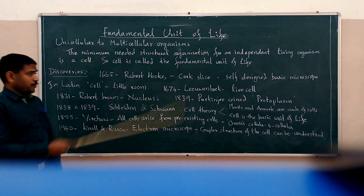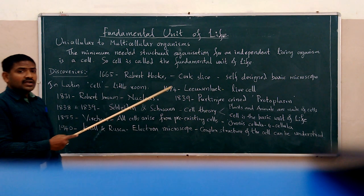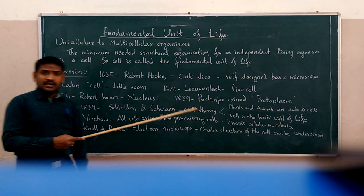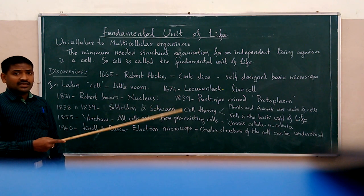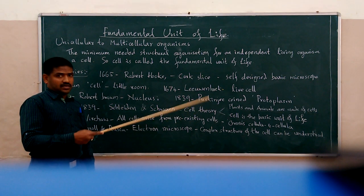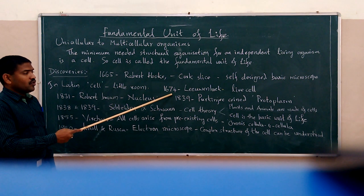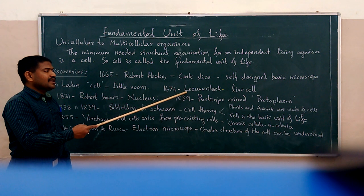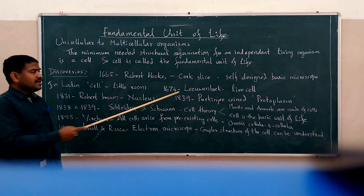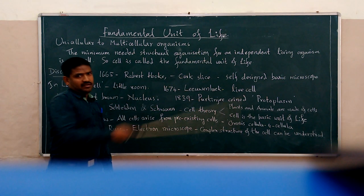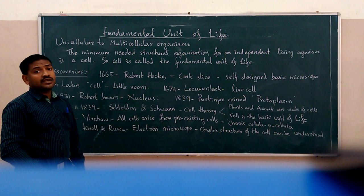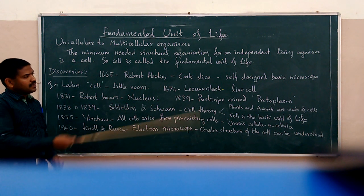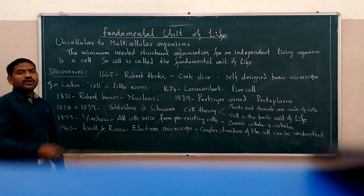Later, in the year 1674, Anton van Leeuwenhoek discovered living cells from pond water using a slightly improvised microscope, which he also made himself.